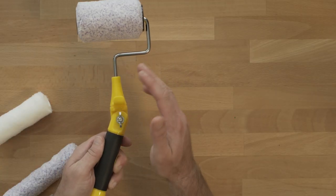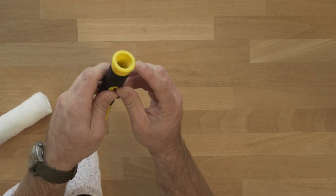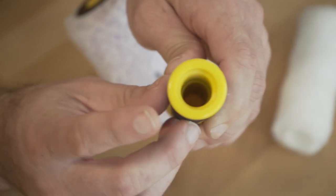Lastly, the adjustable mini roller frame comes with an ACME threaded base right here, so you can mount this on any standard extension pole.